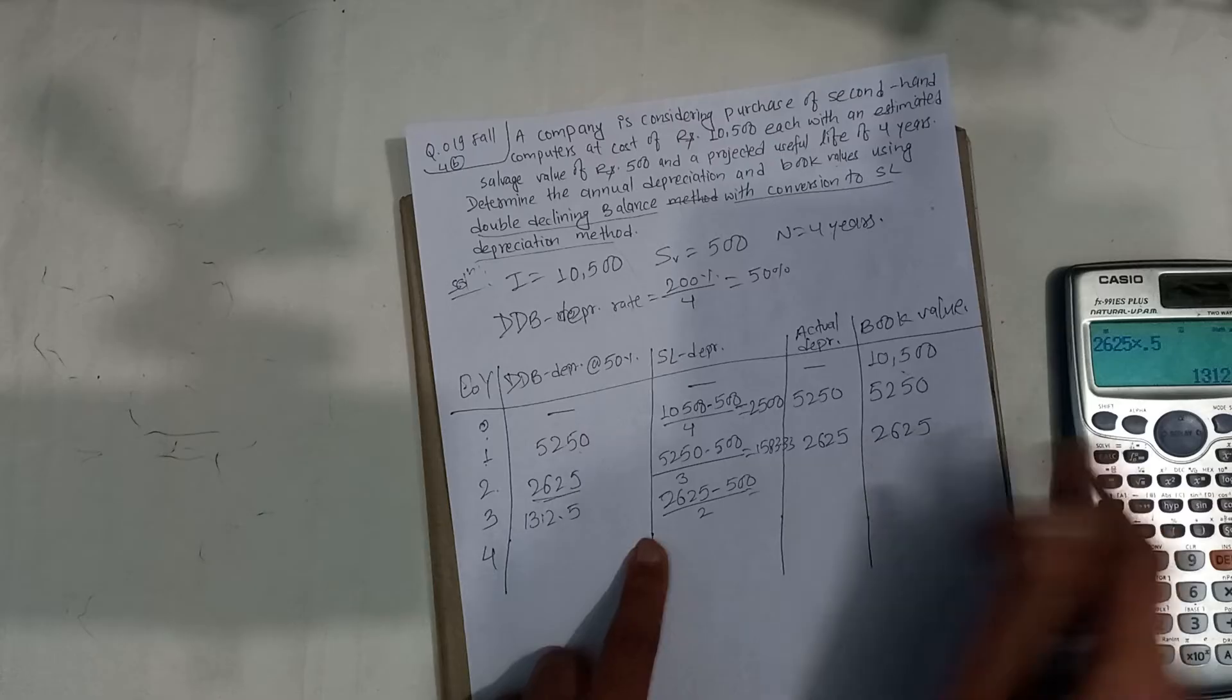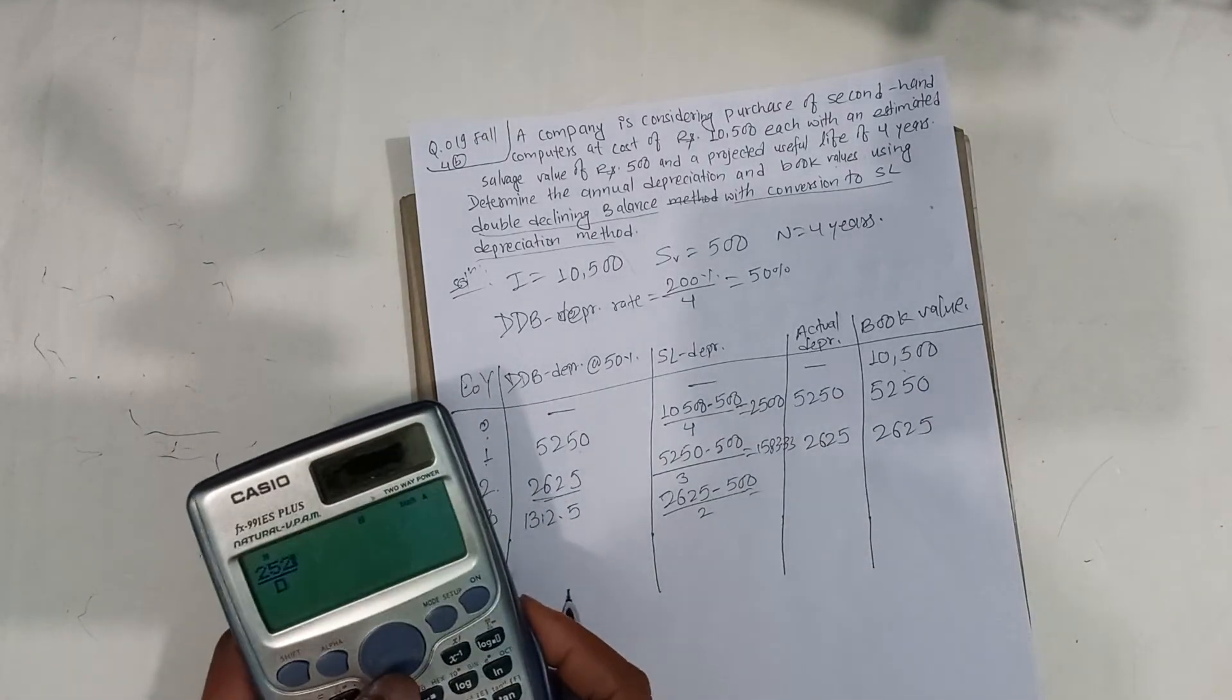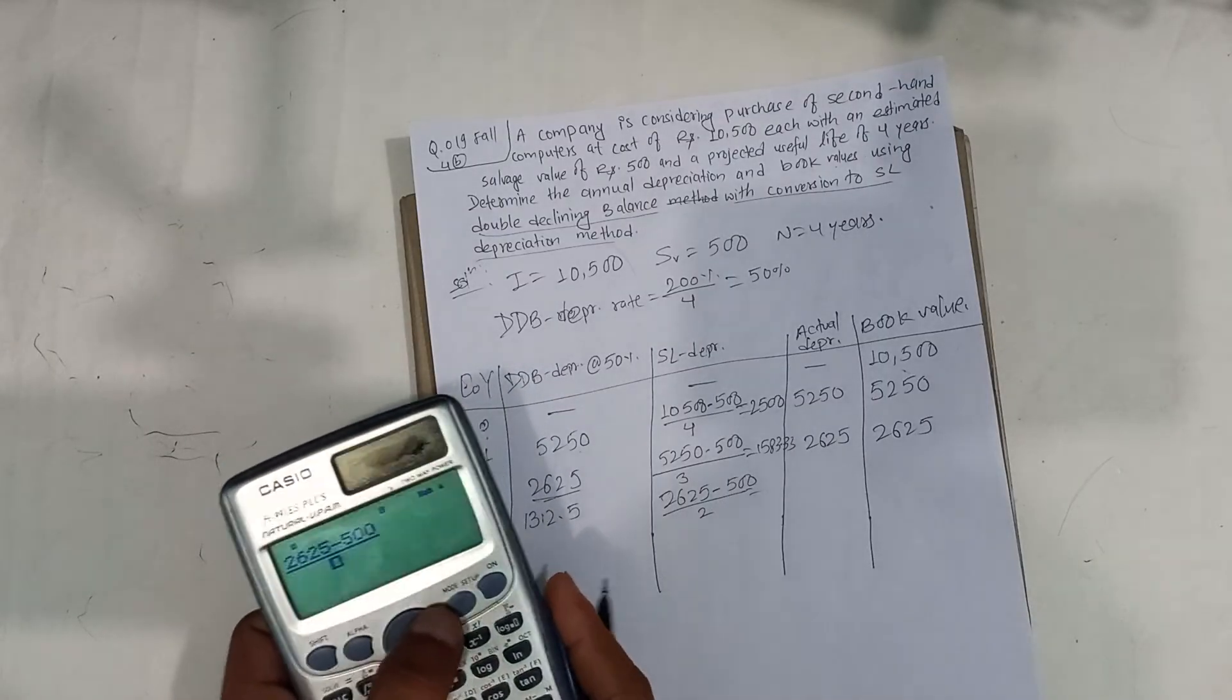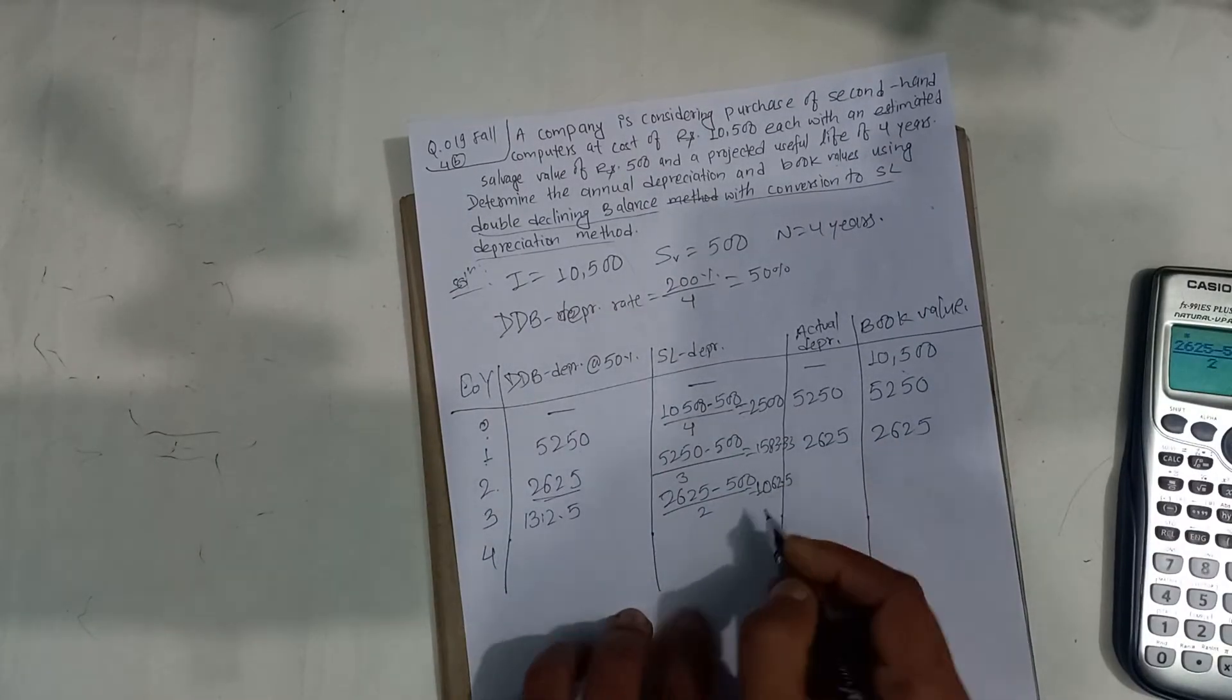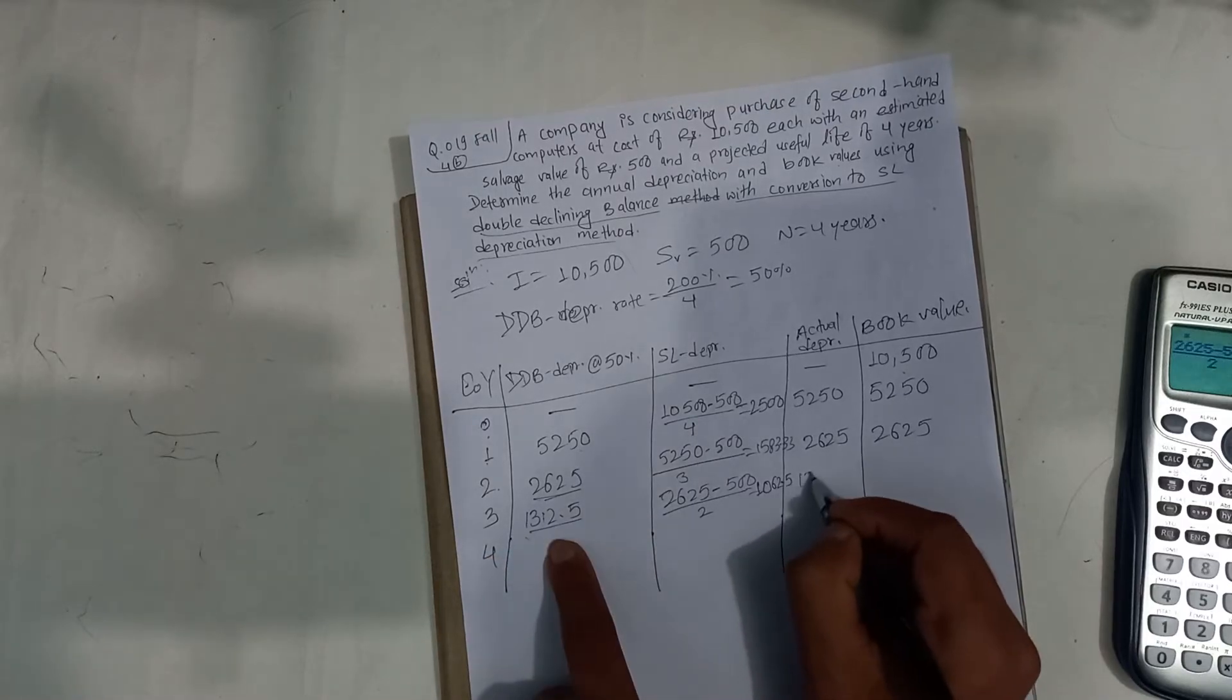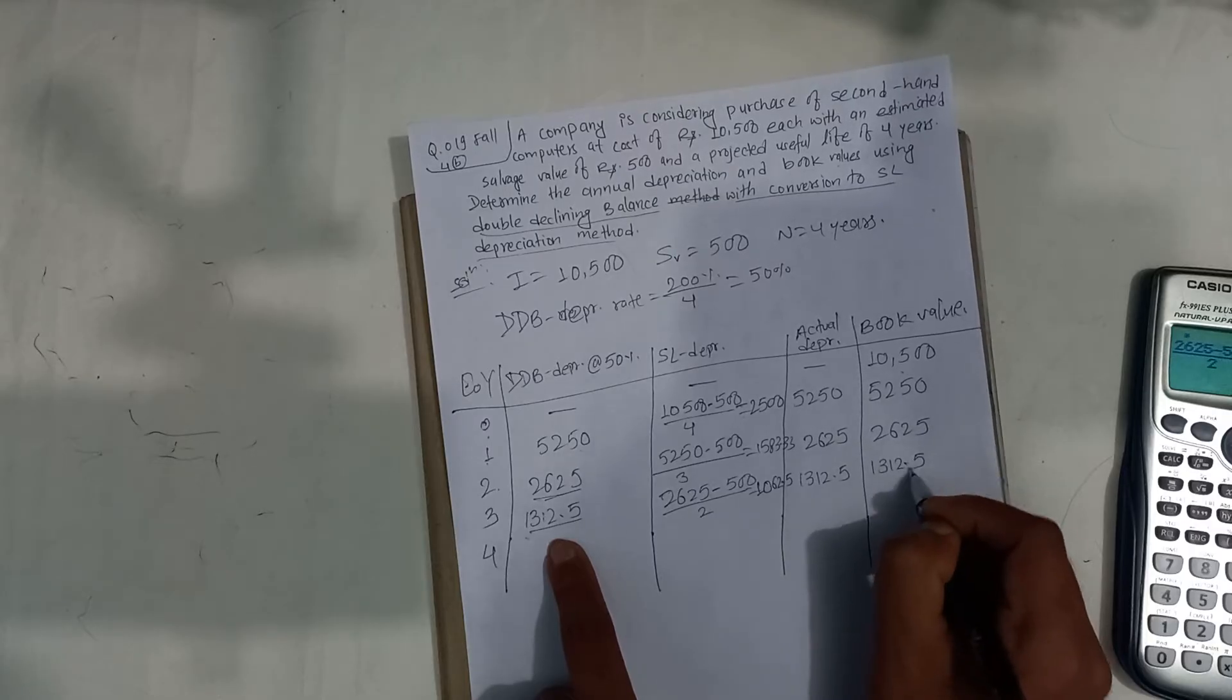Divided by 2, because remaining useful life is 2 years. This will give us 1,062.50. Again, which value is greater? This value is greater, so we use 1,312.50.